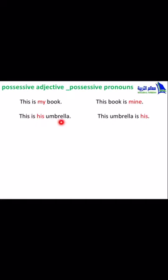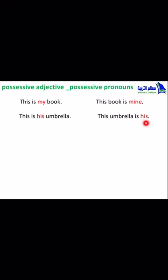Number 2. This is his umbrella. The word 'his' means that this umbrella is owned by him. This umbrella is his. The word 'his' is instead of 'his umbrella'.